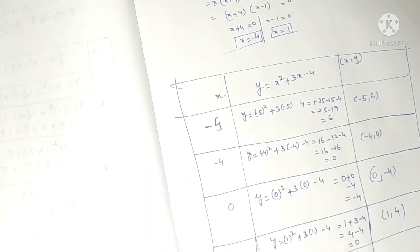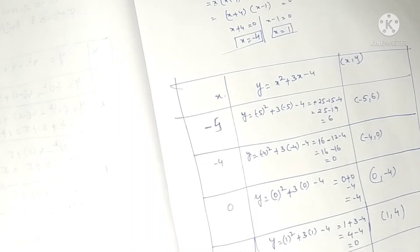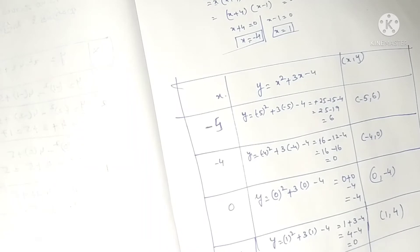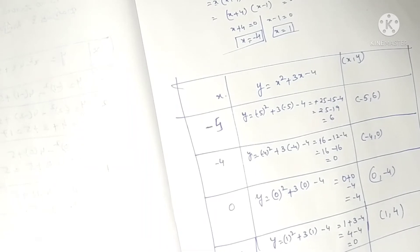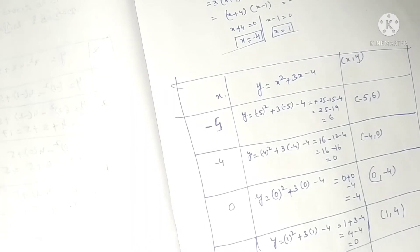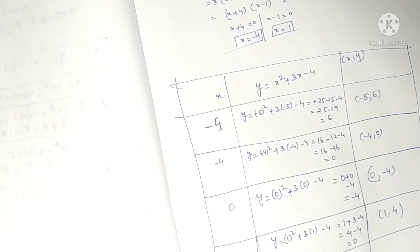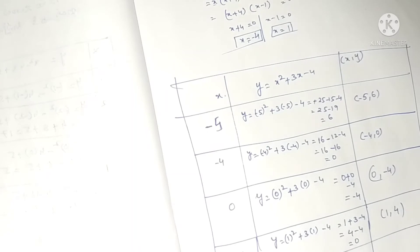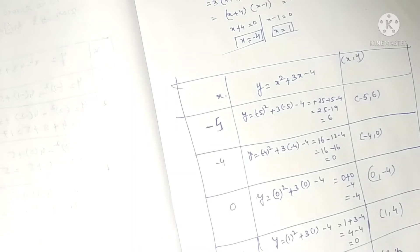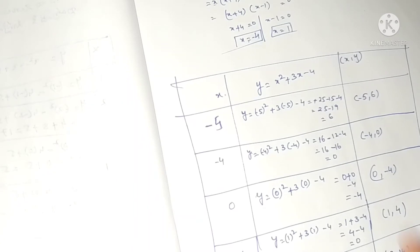When x is 3, y equals 3 square plus 3 into 3 minus 4. That's 9 plus 9 minus 4, which equals 14. So the point is 3 comma 14.